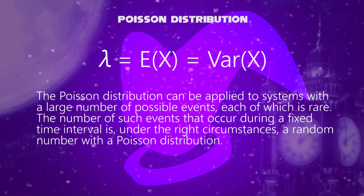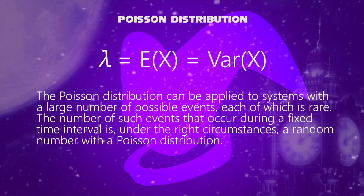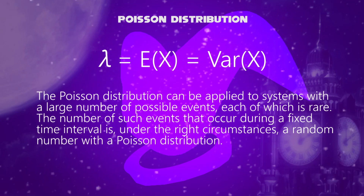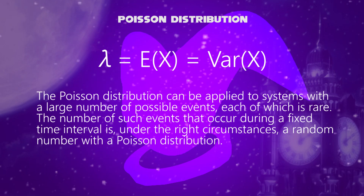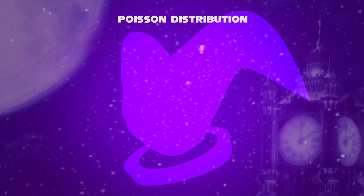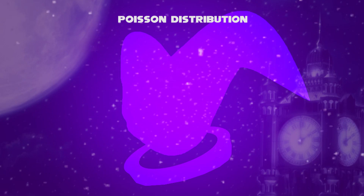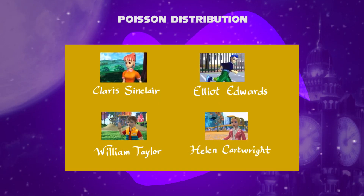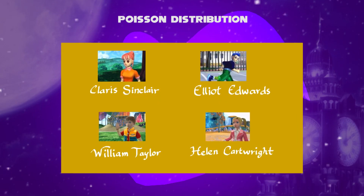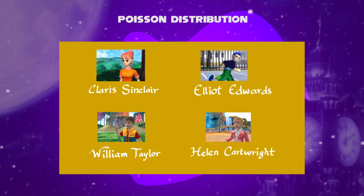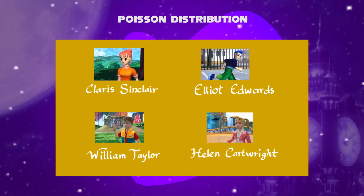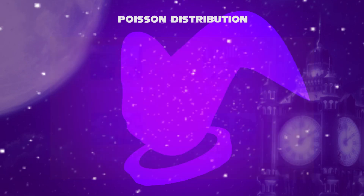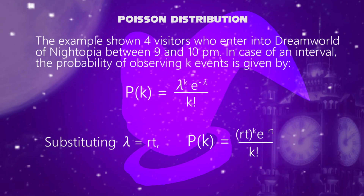The number of such events that occur during a fixed time interval is, under the right circumstances, a random number with a Poisson Distribution. For example, four visitors — Clarice Sinclair, Elliot Edwards, Helen Cartwright, and William Taylor — arrive into the world of Nitopian dreams between 9 and 10 p.m.